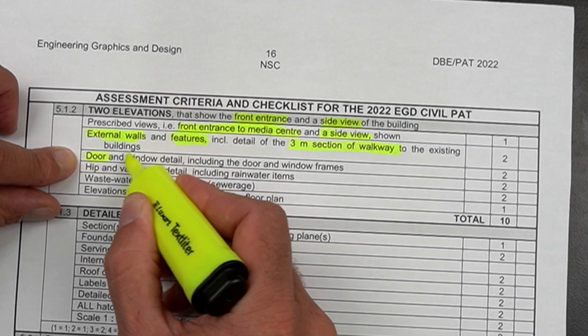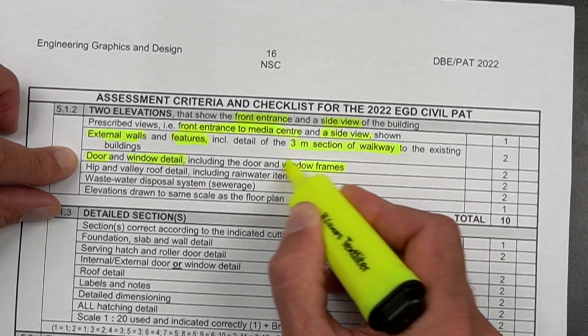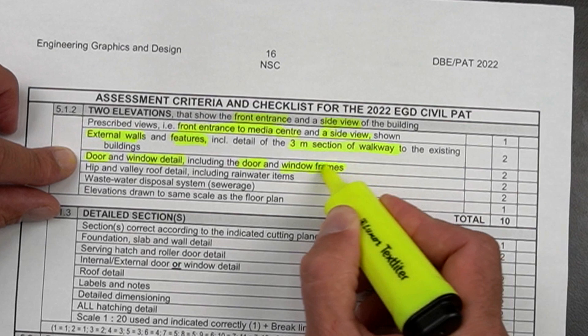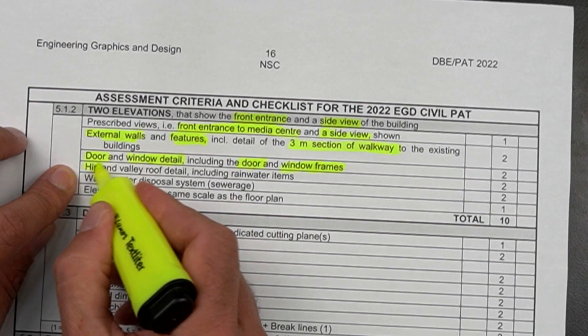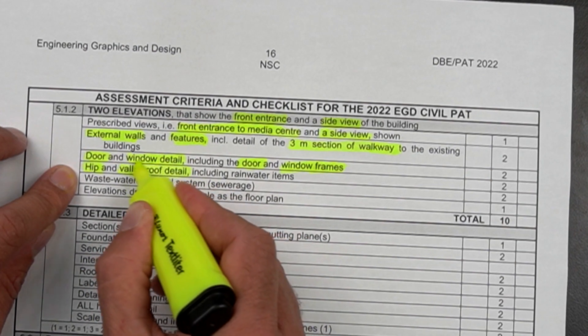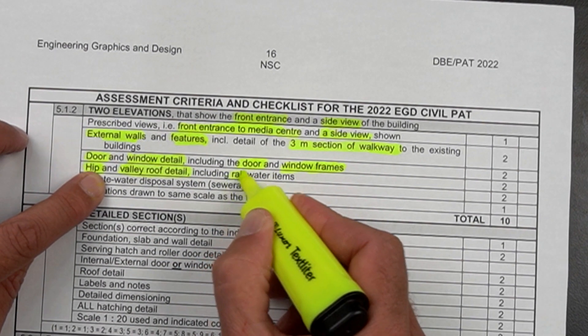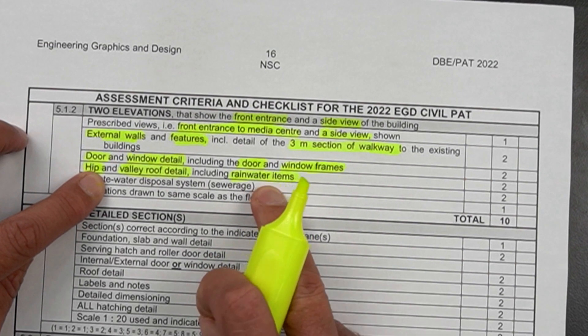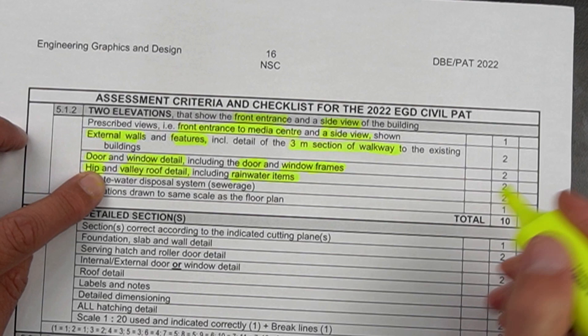Door and window detail, is that done correctly? Including the door and window frames, don't forget those frames, two marks. I'll show you examples in a moment. Do you have the hip and valley roof detail? Is that correct in these elevations? And your rainwater items? In other words, your rainwater downpipes, etc. Is that clearly shown? Two marks.